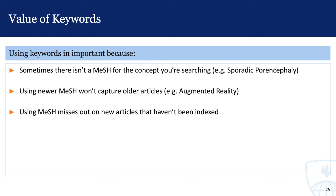In an ideal world, searching by MeSH should be good enough to retrieve relevant citations on a topic. Unfortunately, this is not always the case. Sometimes, there isn't a MeSH for the concept you're searching. This is particularly true for terms related to technology and rare diseases. For example, there is no MeSH for sporadic porencephaly.